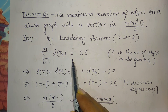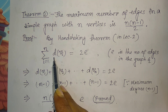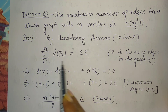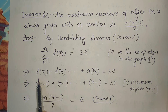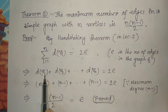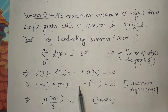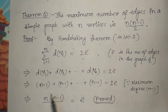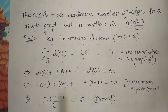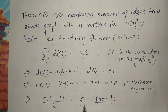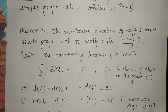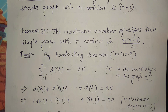For the proof of theorem two, we use the handshaking theorem: the total degree of a graph equals 2e. If it is a complete graph with n vertices, every vertex has degree n-1, so the sum of degrees is n(n-1). Setting this equal to 2e gives e = n(n-1)/2, which proves the theorem. Thanks for watching — next lecture is on bipartite graphs. Have a nice time!